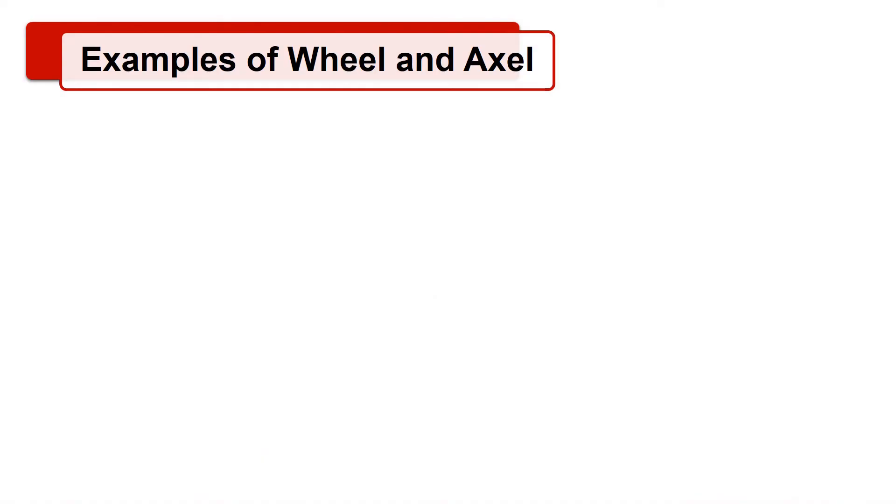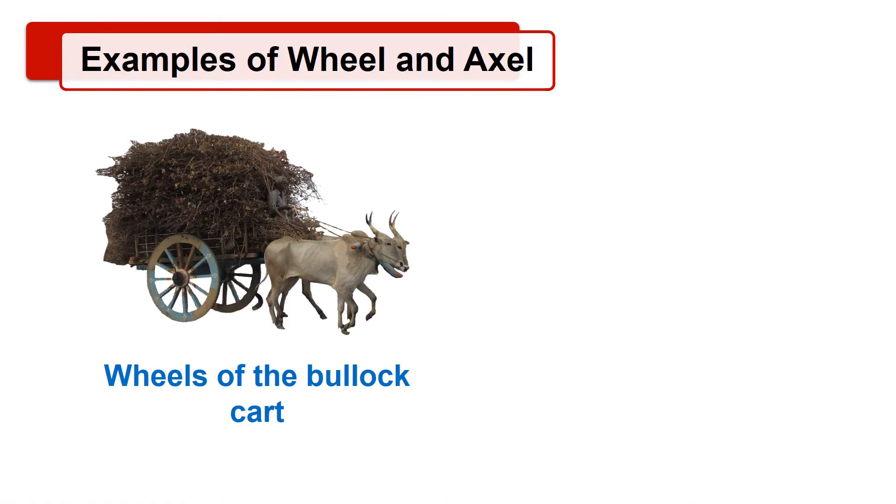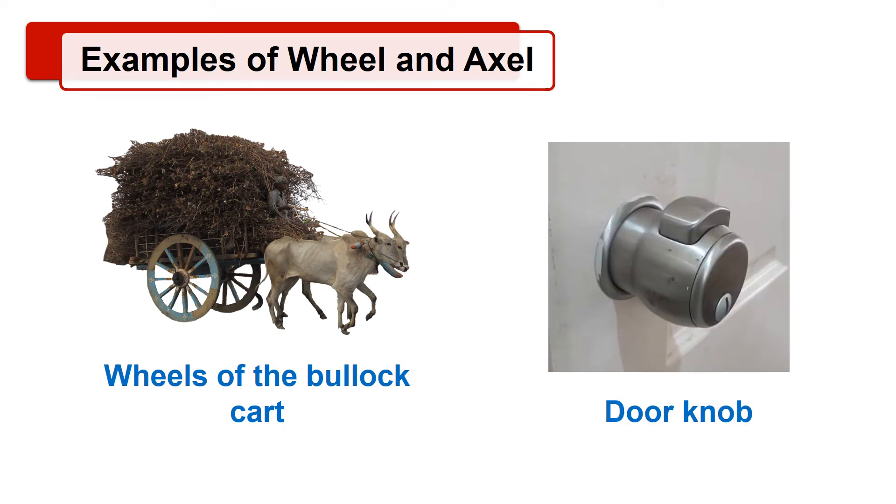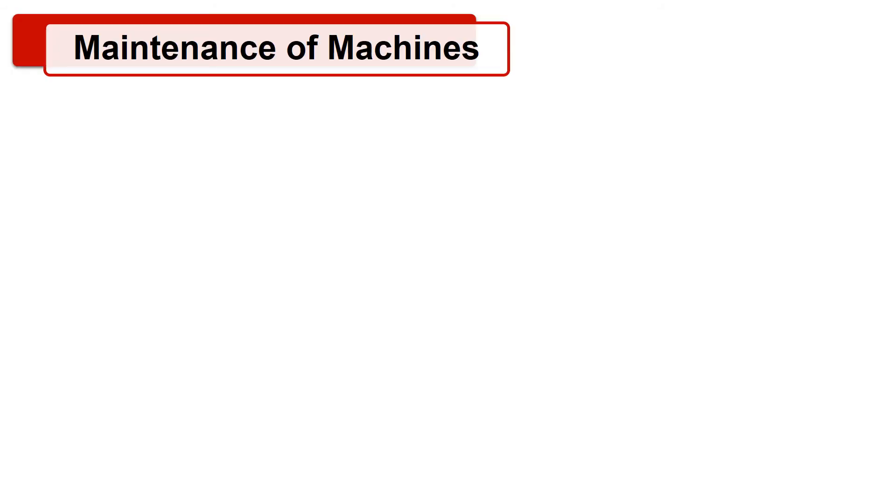Examples of wheel and axle are wheels of the bullock cart, door knob, etc. In this chapter, we studied what are simple machines. Now, let's see how to take care of the machines.